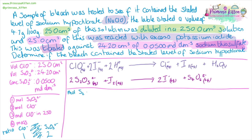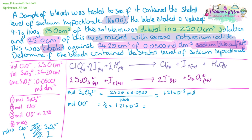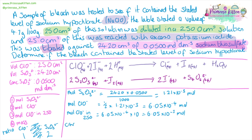So to start, we're going to work out the number of moles of thiosulfate involved. That is the volume times the concentration over 1000, which gives 1.21 × 10⁻³ moles. And this is where our ratio is involved — so a half times the moles of thiosulfate gives us 6.05 × 10⁻⁴ moles of chlorate in 25 cm³. Then 6.05 × 10⁻⁴ times 10 gives us 6.05 × 10⁻³ moles in 250 cm³.